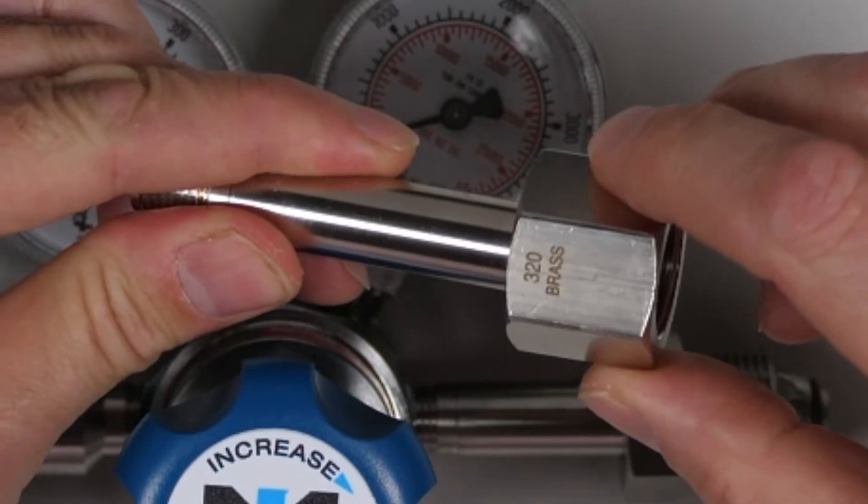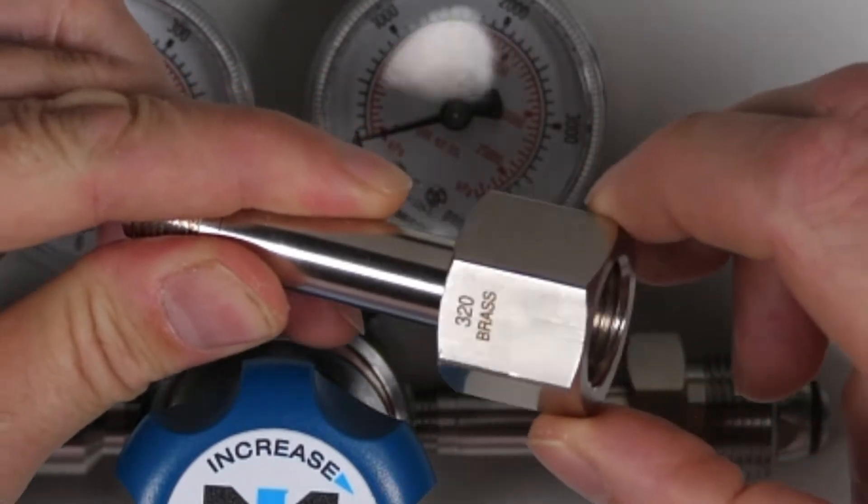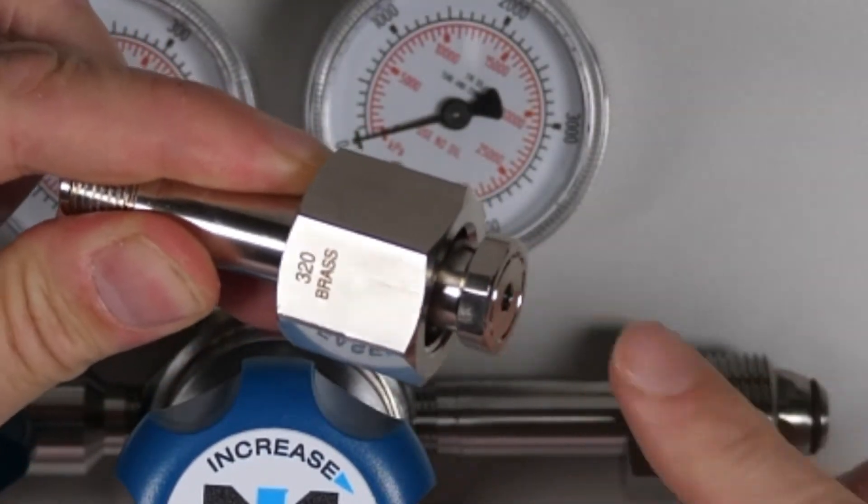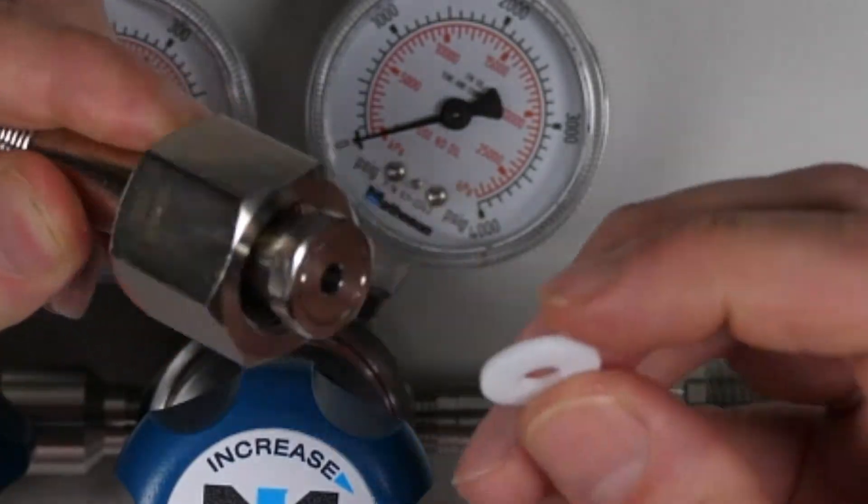The CGA 320 fitting for carbon dioxide cylinders has a flat-faced nipple and needs a washer.